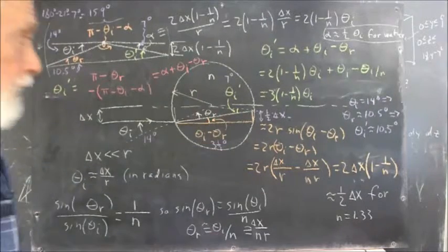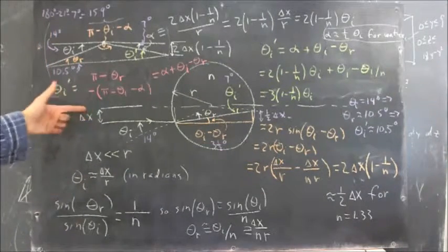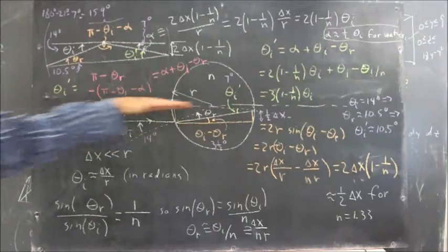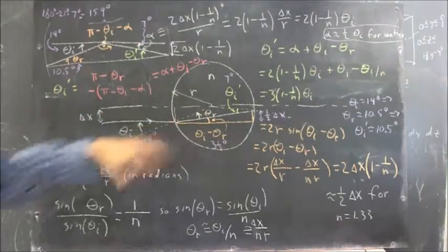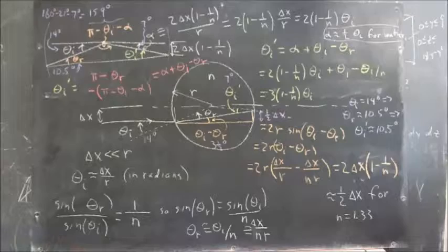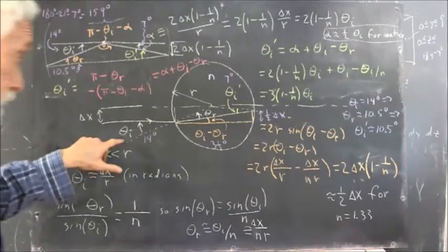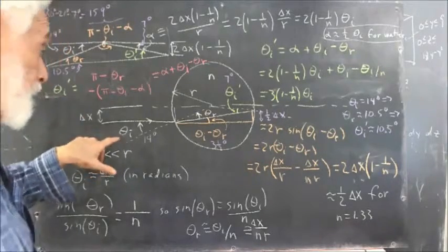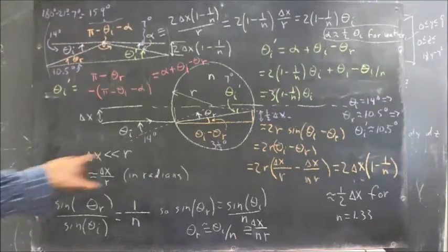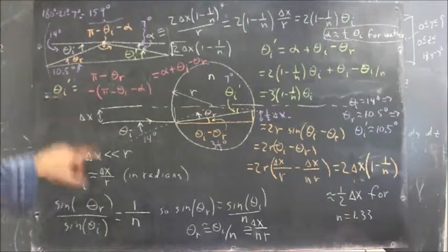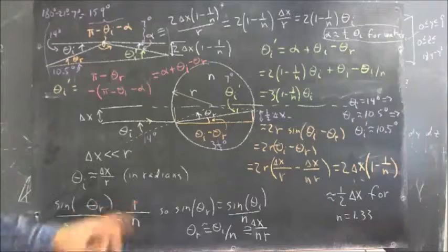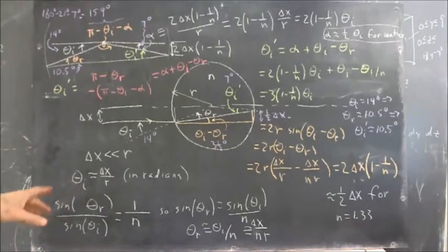Quick summary of this entire development. We have an axial line, or central line, our axis, and an incoming ray at a distance delta x from the axial ray and parallel to it. The angle of incidence is theta sub i, and the angle of refraction is theta sub r. We're going to assume delta x is significantly smaller than r, small enough that we can use small angle approximations.